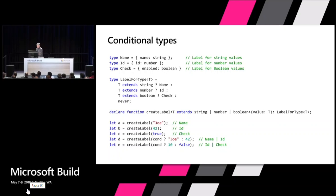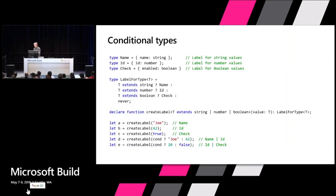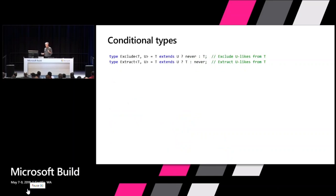In fact we distribute union types over conditional types. The last examples are interesting because the type that goes in is number or string, and we apply that to each of number and string individually and produce a resulting union type. So if you give us a union type in, a union type comes out that has been mapped for each individual element.